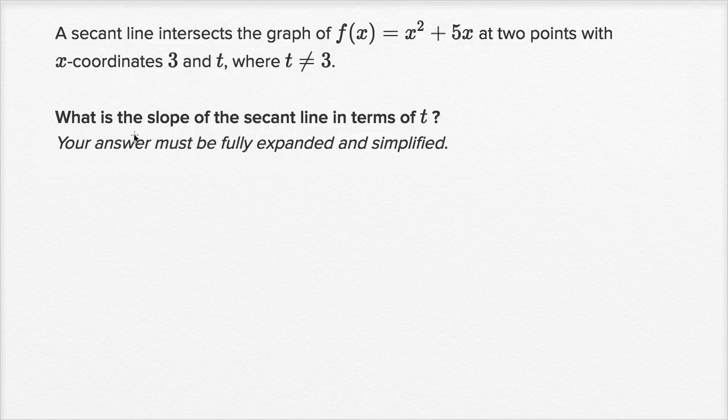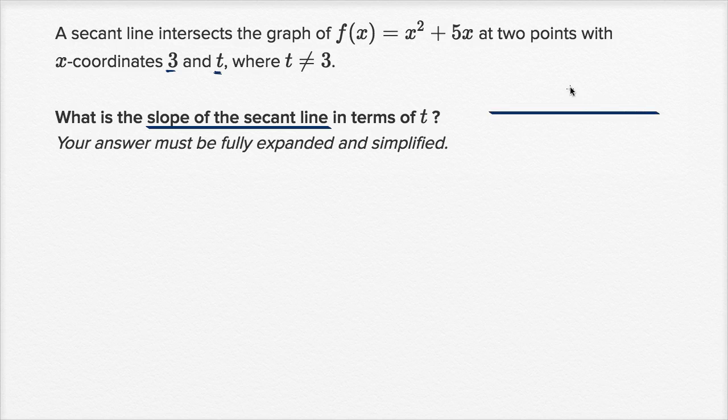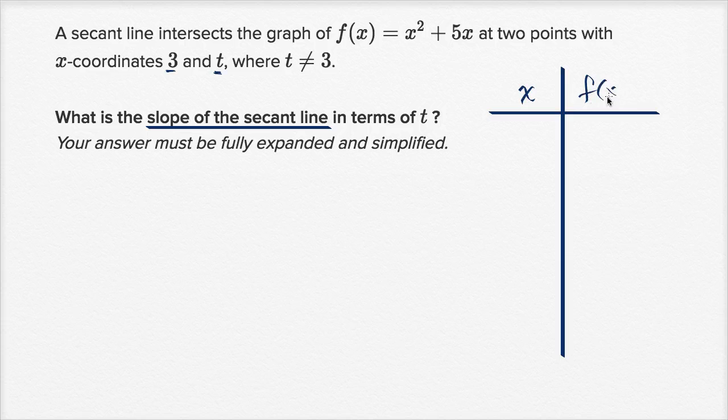We want to find the slope of the secant line, and they essentially give us two points on the secant line. They tell us what x is at each of those two points, and then if we know what x is, we're able to figure out what f(x) is at each of those points. So we can make a little table here. We know x, and we know f(x).